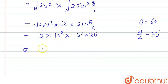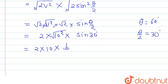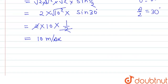Substituting the values: V = 10 m/s, so we have 2 × 10 × sin(30°) = 2 × 10 × (1/2). The 2s cancel out, leaving 10 meters per second. So the magnitude of change in velocity, Δv, is 10 meters per second.